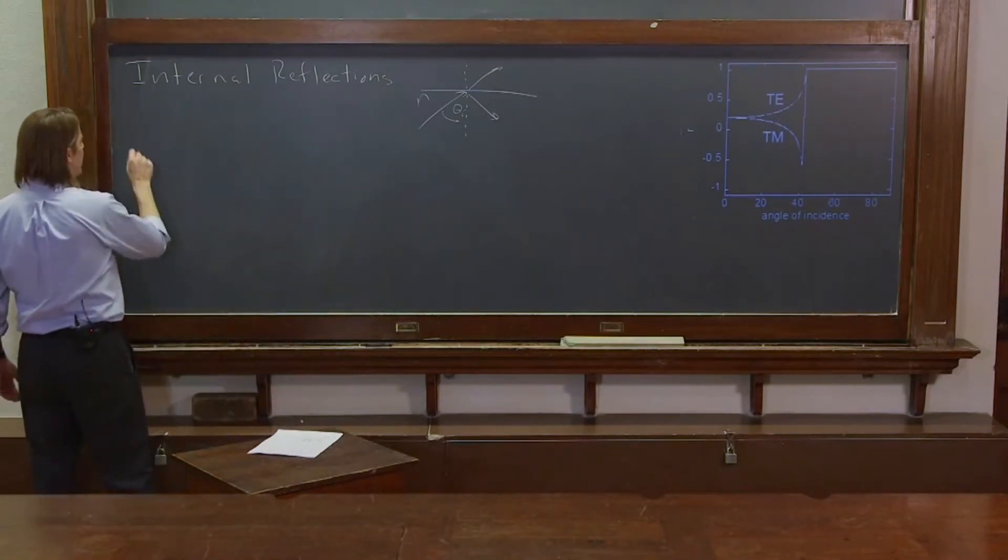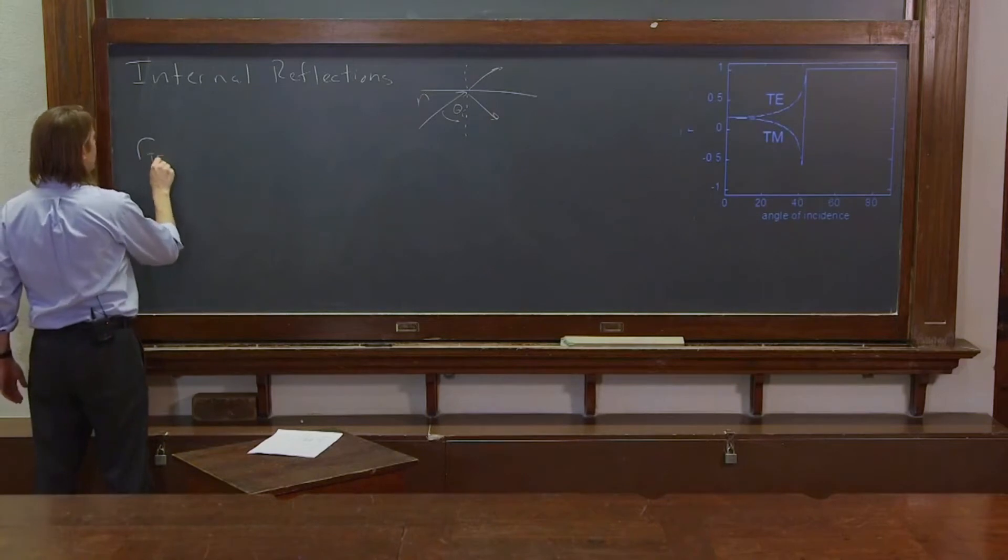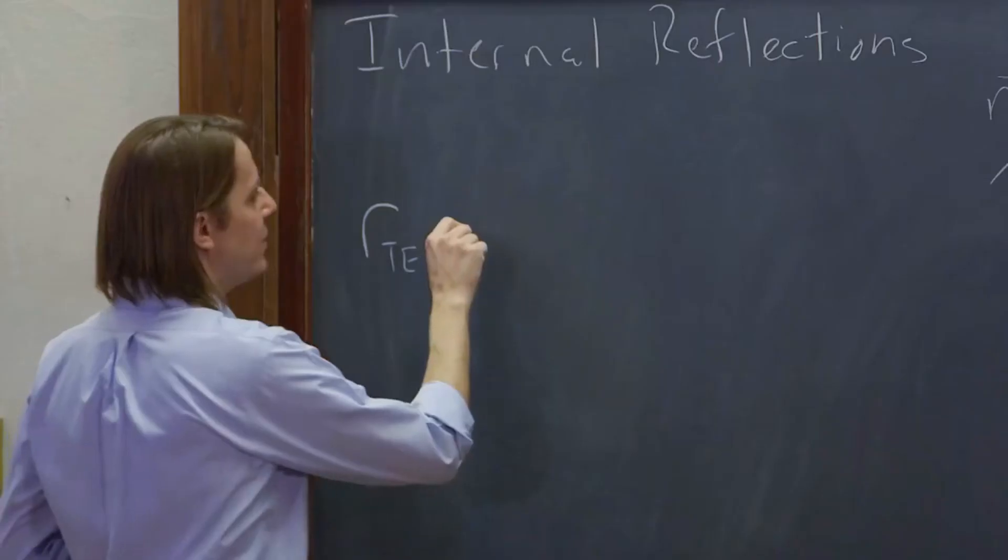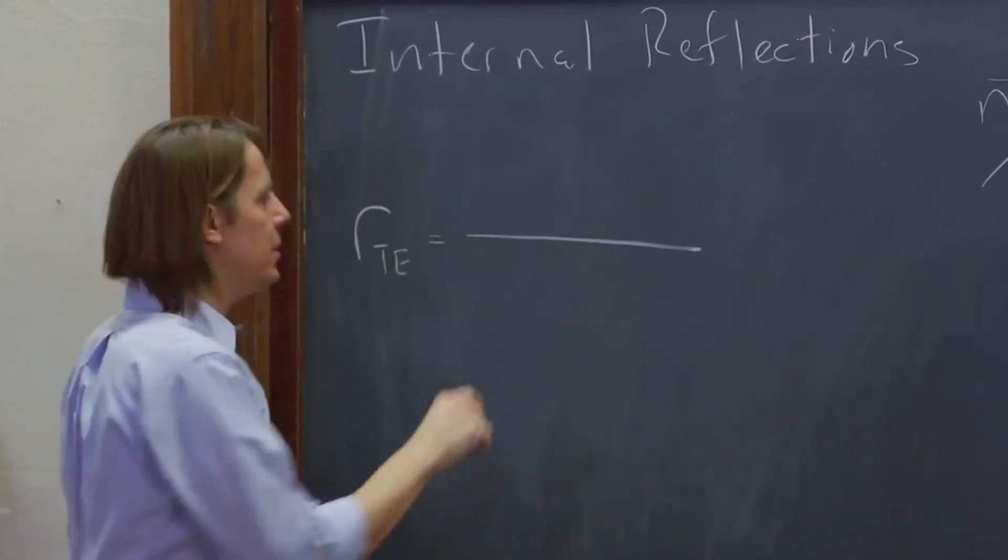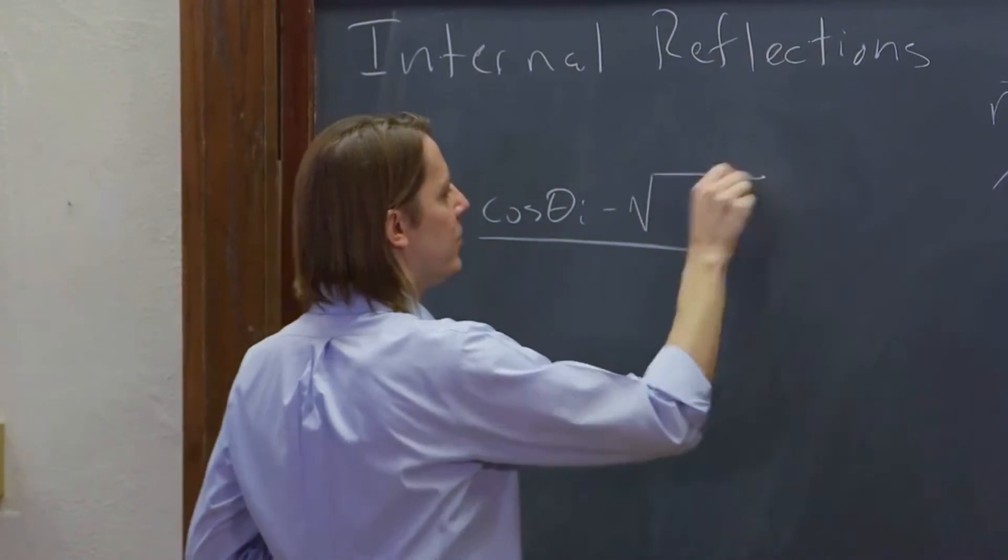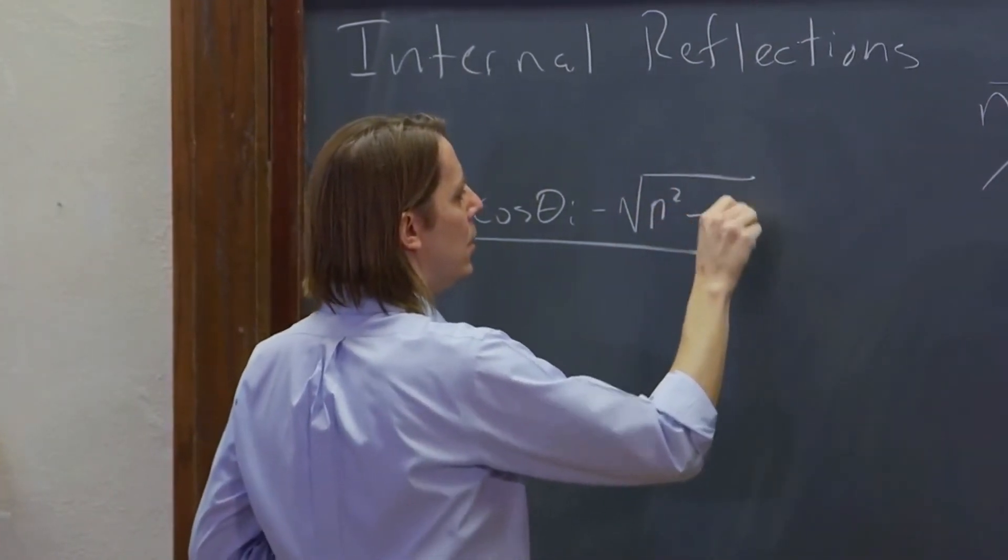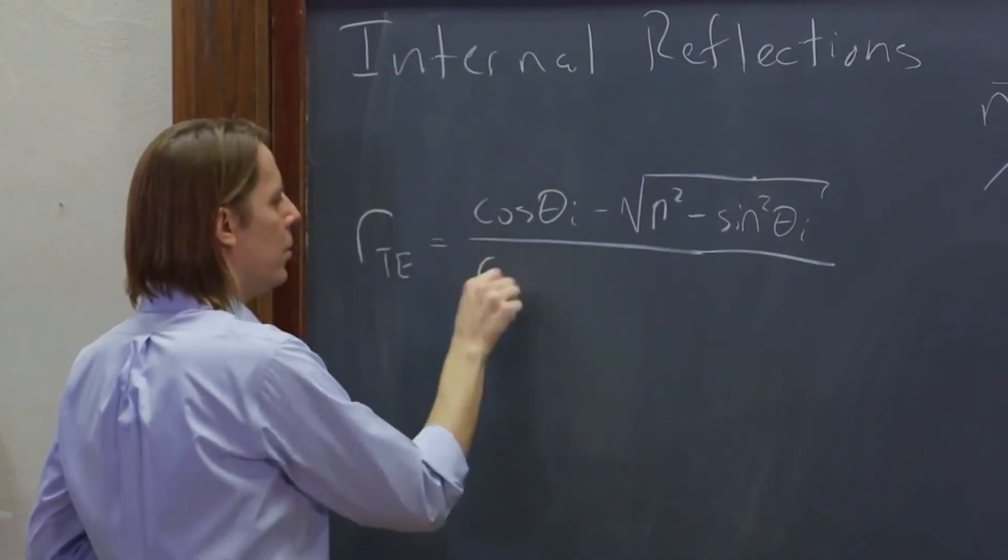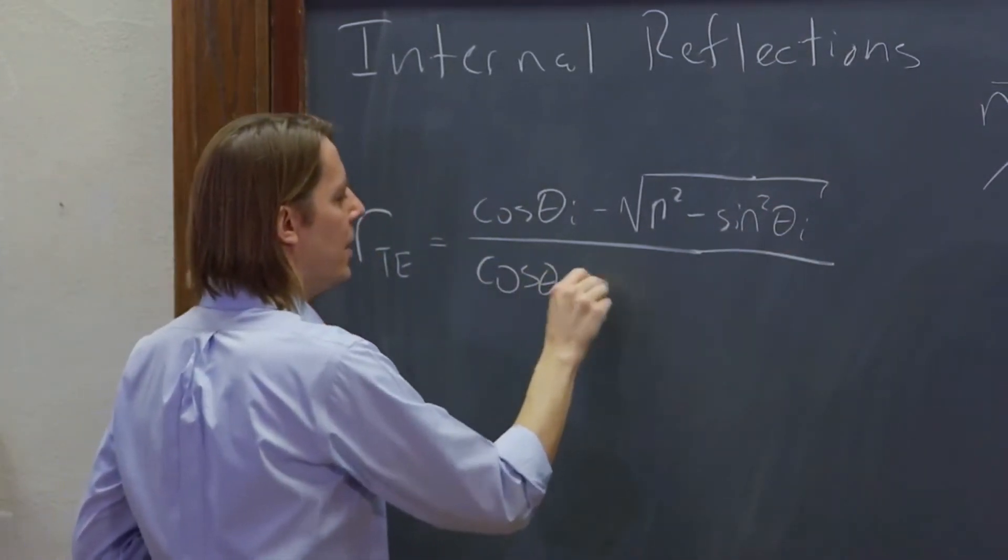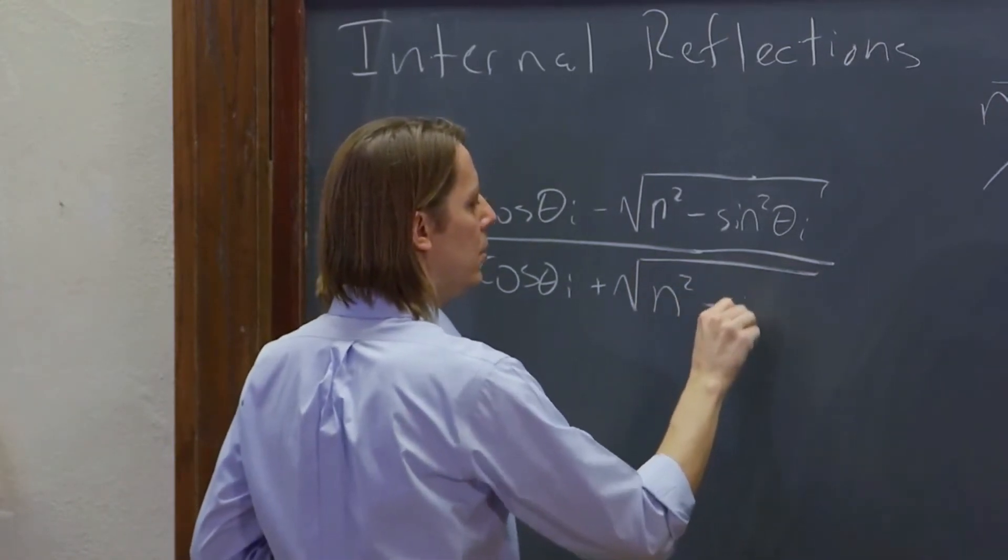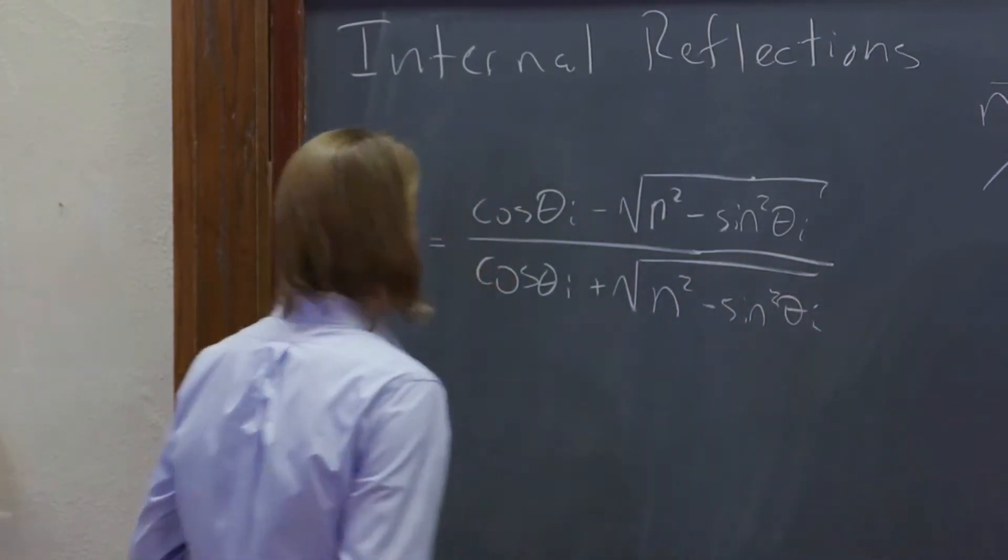So the reflection coefficients are actually the same. They don't actually care if you're going internal reflection or external reflection. RTE is cosine theta i minus the square root of n squared minus sine squared theta i over cosine theta i plus the square root of n squared minus sine squared theta i.